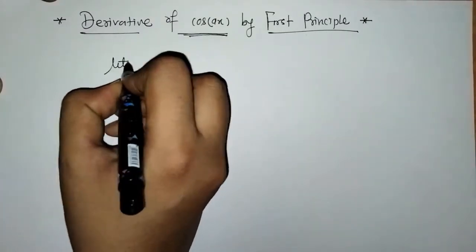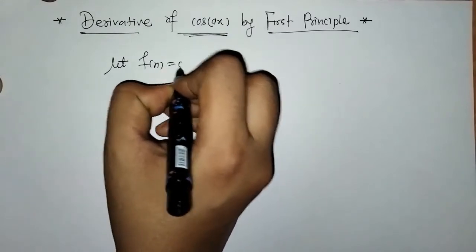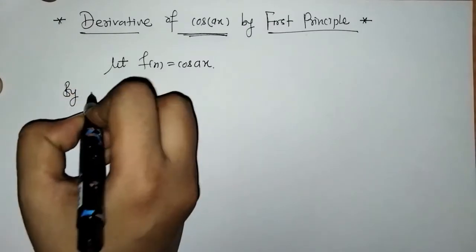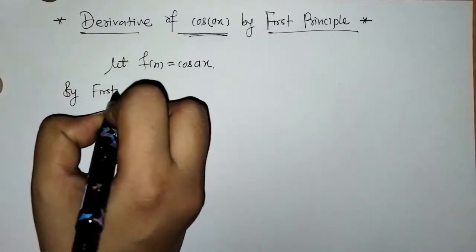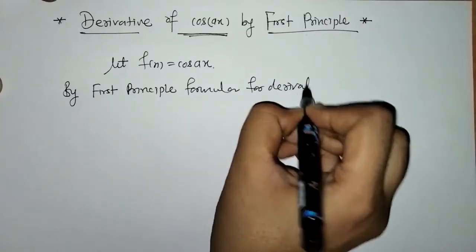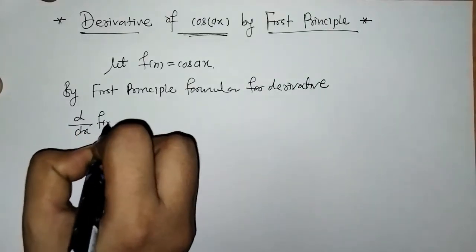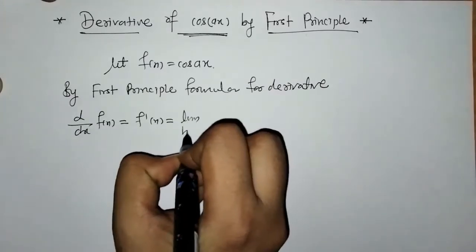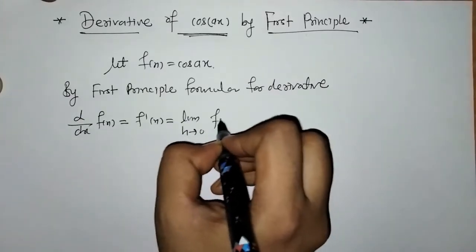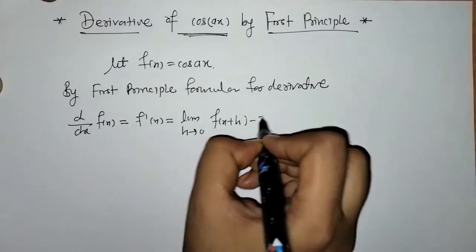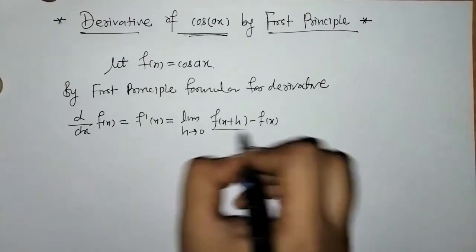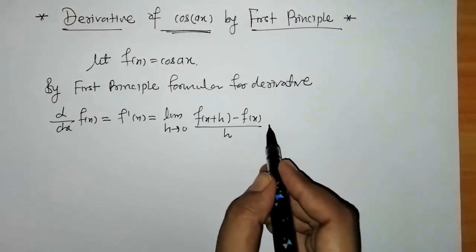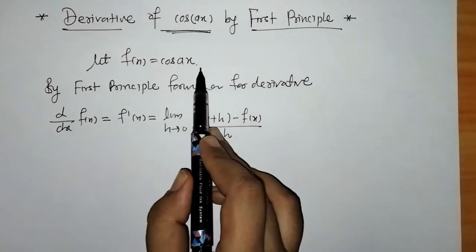So, here we have f(x) = cos(ax). We know we have the first principle: f'(x) is equal to the limit as h tends to 0 of f(x+h) minus f(x) upon h. By using this formula we have to find the derivative of cos(ax).